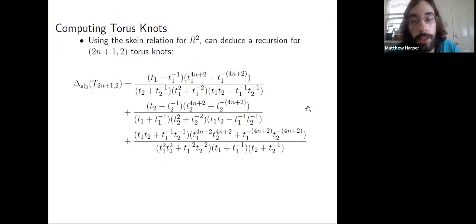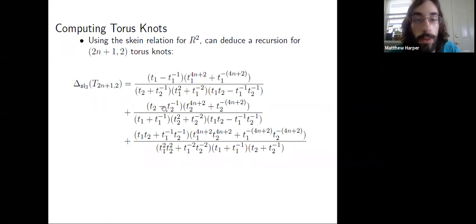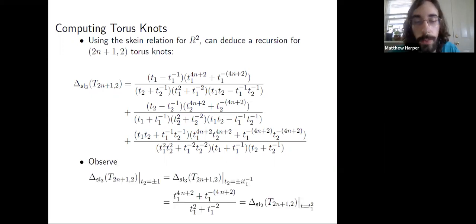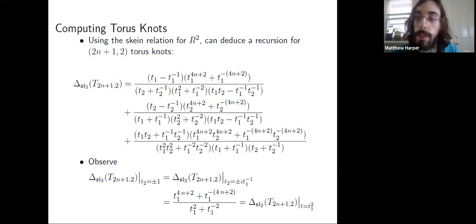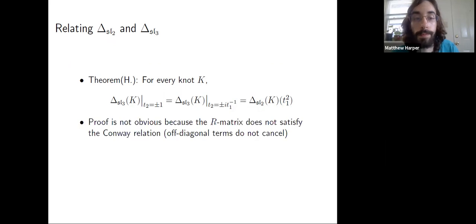Here's what the invariant looks like in its wholly non-simplified form, not making use of any symmetries. The first term is T_1-dominant, the second term is T_2-dominant where we swap the roles of T_1 and T_2, and the third term has equal T_1 and T_2, so it's completely symmetric. The observation is: plugging in T_2 equals one or T_1-inverse brings you to the Alexander polynomial of two-string torus knots. More generally, if we have a knot and make these evaluations, we recover the SL2 invariant.